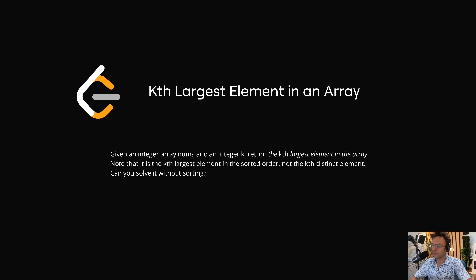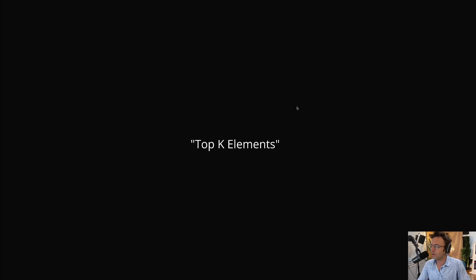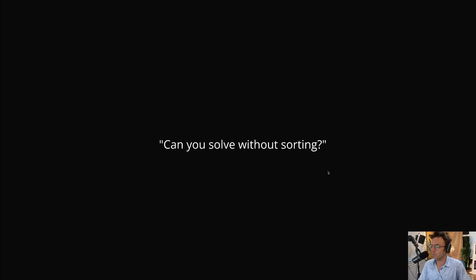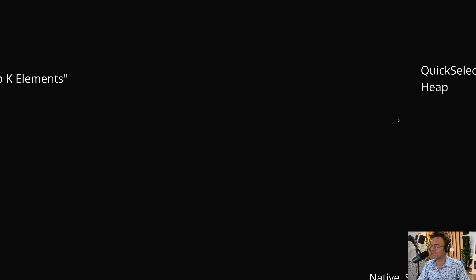But first, just like any algorithm, we need to identify which pattern to use. If we look at the title and description, we see two important clues. First, in the title, we see something along the lines of 'Top K.' The Top K elements pattern is seen all throughout LeetCode and should be the very first clue. The second clue is in the description: 'Can you solve without sorting?' That's the nail in the coffin — we now know which algorithm to use. We could utilize Quick Select or an algorithm based on a heap. Both should be sufficient to pass a coding interview.